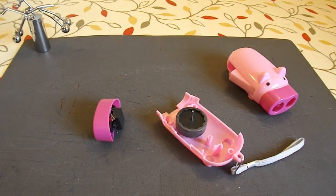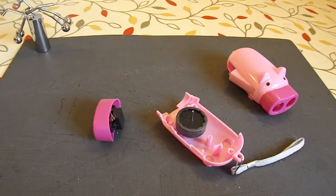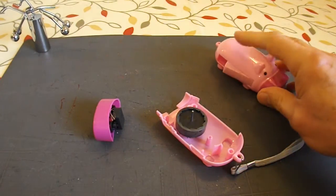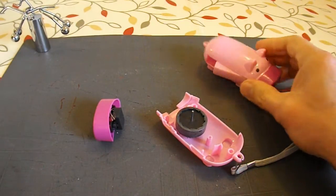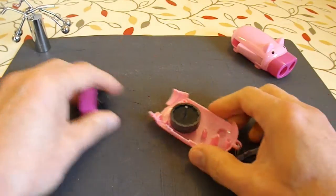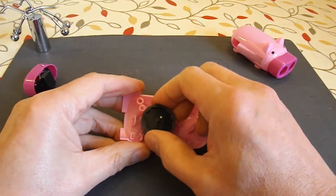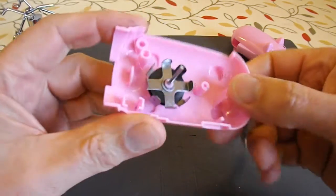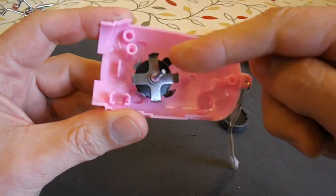A shortcut to getting one of these pancake coils is to disassemble one of these dynamo torches. I've already disassembled these two for other purposes, but I do happen to have left in this one the coil.